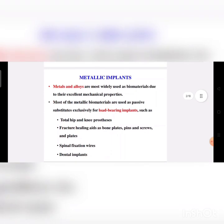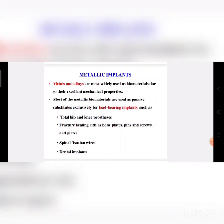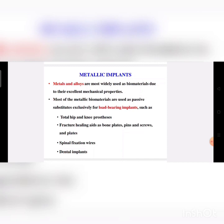Now let us see about metallic implants. There are many types of metals that can be used as a biomaterial. Metals are widely used primarily for their mechanical properties. Metallic biomaterials are substitutes for organs or structures where load bearing is very important, such as total hip and knee prosthesis, fracture healing aids like bone plates, pins, screws, spinal fixation wire, and dental implants. In hip and knee prosthesis, the weight-bearing or load-bearing capacity must be high, so metallic implants are used.